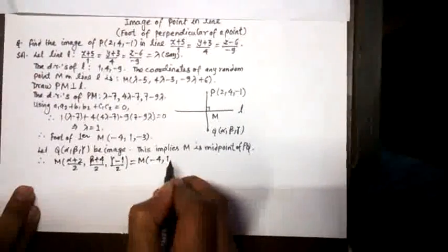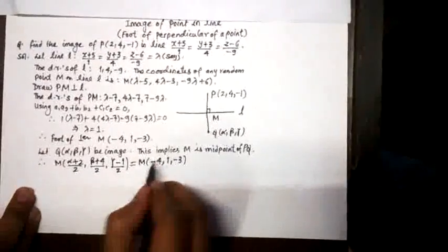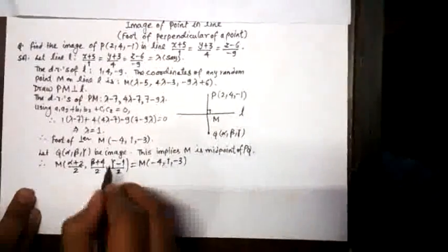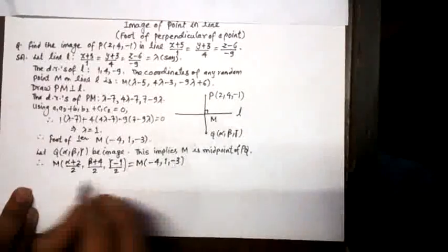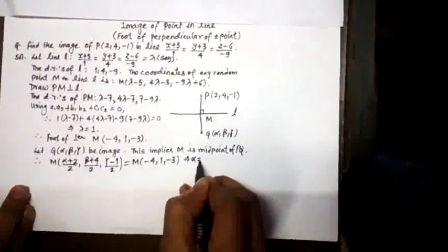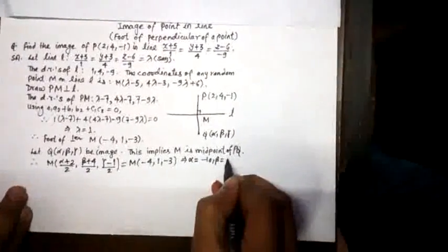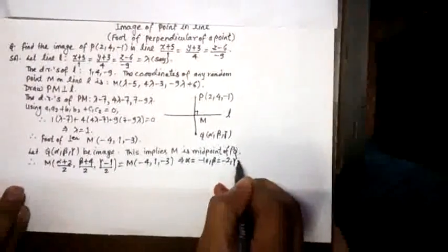And we have already obtained the value of M as (-4, 1, -3). From here, we shall be equating the x coordinate to the x coordinate, the y coordinate to the y coordinate, and the z coordinate to the z coordinate. In the process, we get α = -10, β = -2, and γ = -5.